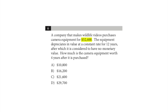The equipment depreciates in value at a constant rate for 12 years, after which it is considered to have no monetary value — so it goes from that value to zero over 12 years. I'm assuming constant rate means a constant amount of money per year. Not very clearly worded, but we'll have to roll with it.